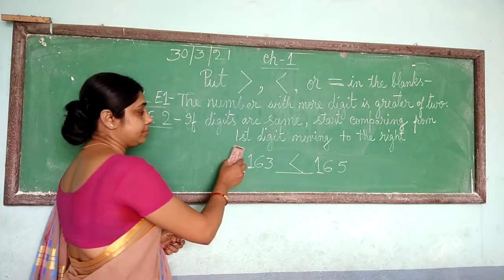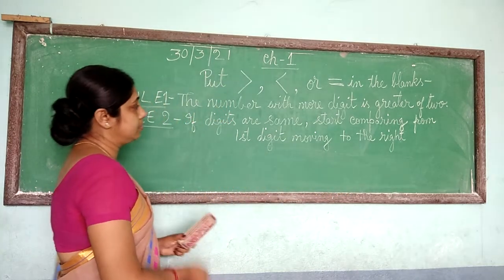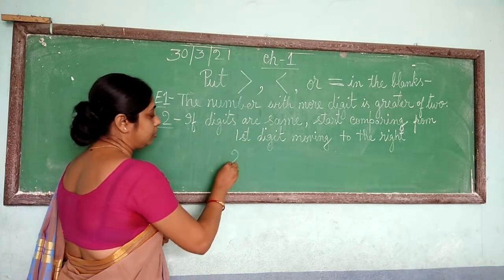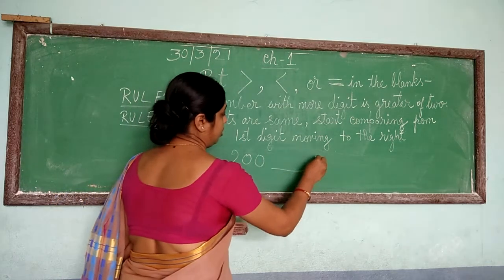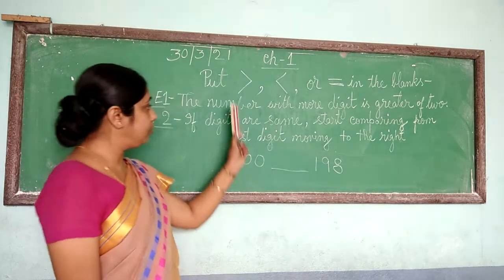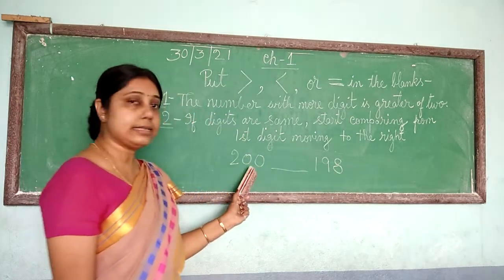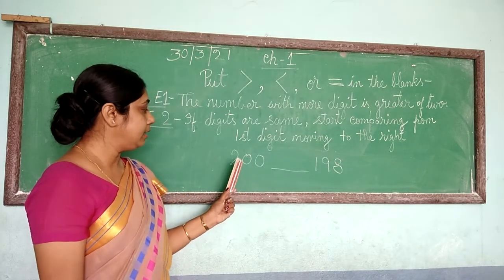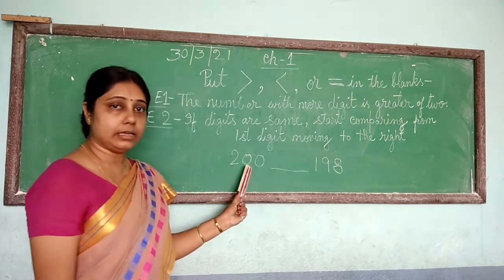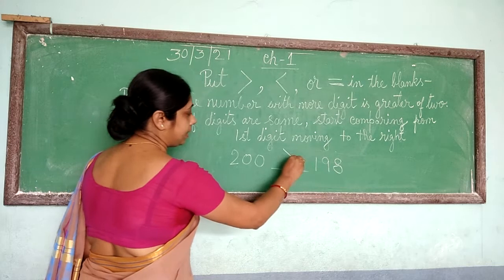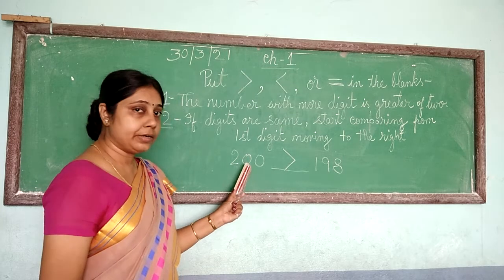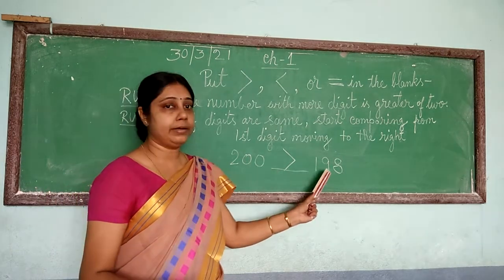Let us go to another example: 200 and 198. Here also 3 digits on both sides. The first digit of 200 is 2, and the first digit of 198 is 1. Obviously this side — 200 — is greater. So we keep the open side facing 200. We will say: 200 is greater than 198.